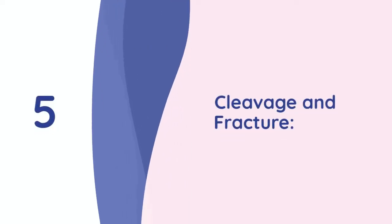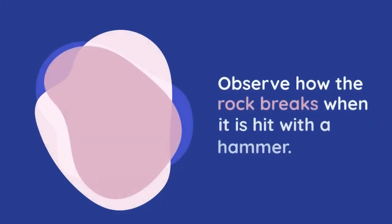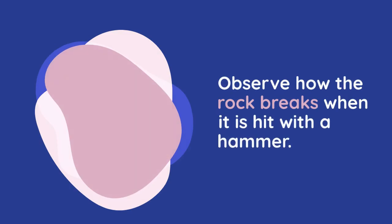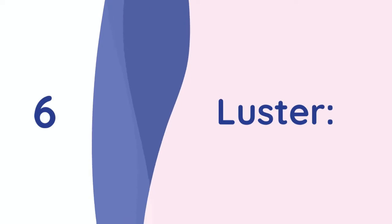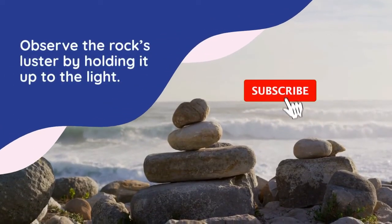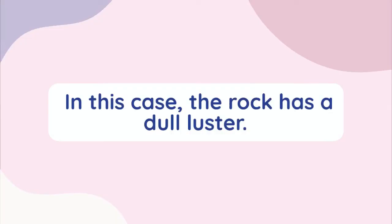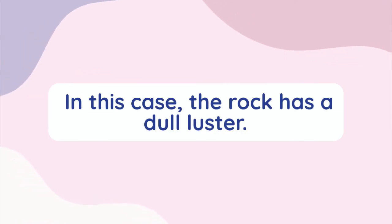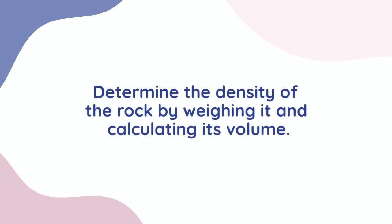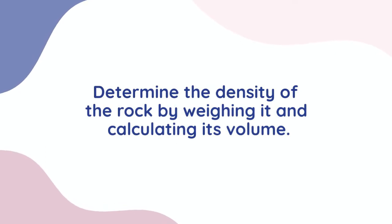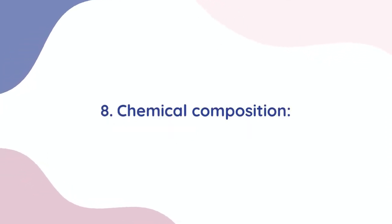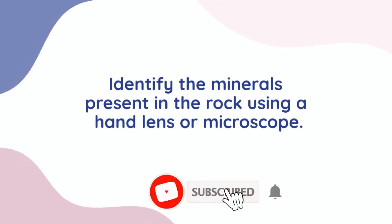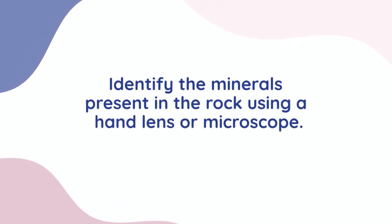5. Cleavage and fracture. Observe how the rock breaks when it is hit with a hammer. The rock breaks along irregular planes. 6. Luster. Observe the rock's luster by holding it up to the light. The rock has a dull luster. 7. Density. Determine the density of the rock by weighing it and calculating its volume. 8. Chemical composition. Identify the minerals present in the rock using a hand lens or microscope.